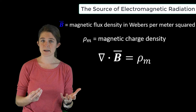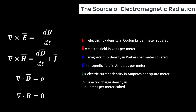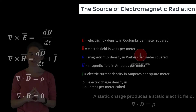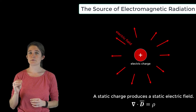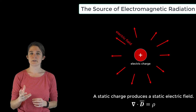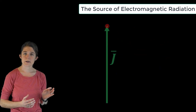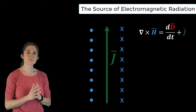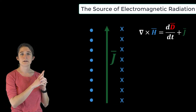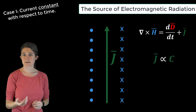Since there are no magnetic monopoles, the solenoidal law will always be zero. As we've seen in other modules, a static charge produces a static and therefore non-propagating electric field by Gauss's law. A moving charge or current produces a curling magnetic field by Ampere's law. Suppose we have an infinite line current in the vertical direction like this, which is constant with respect to time.